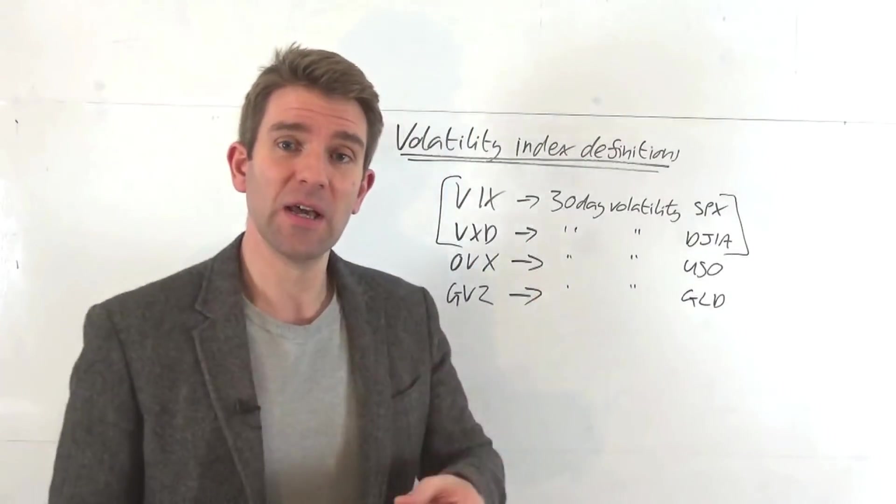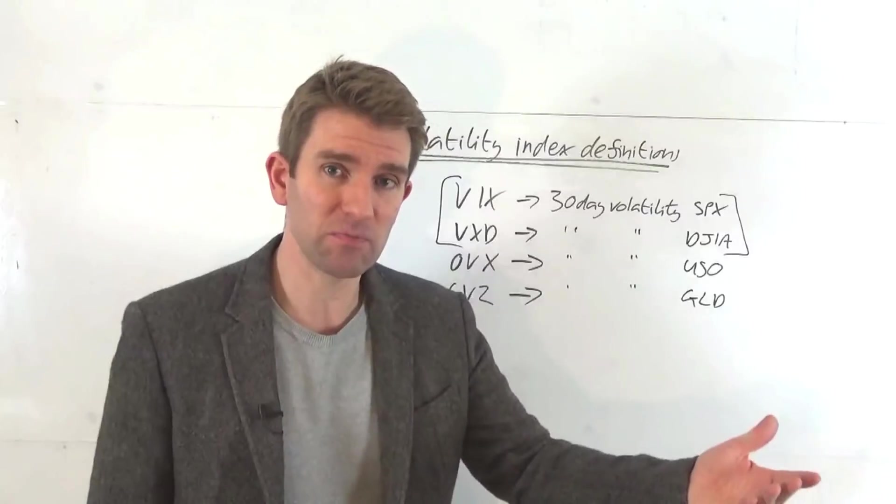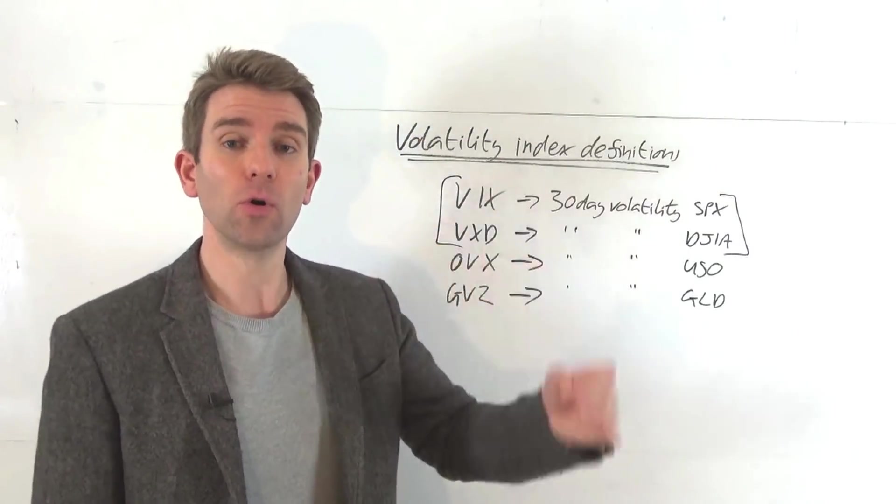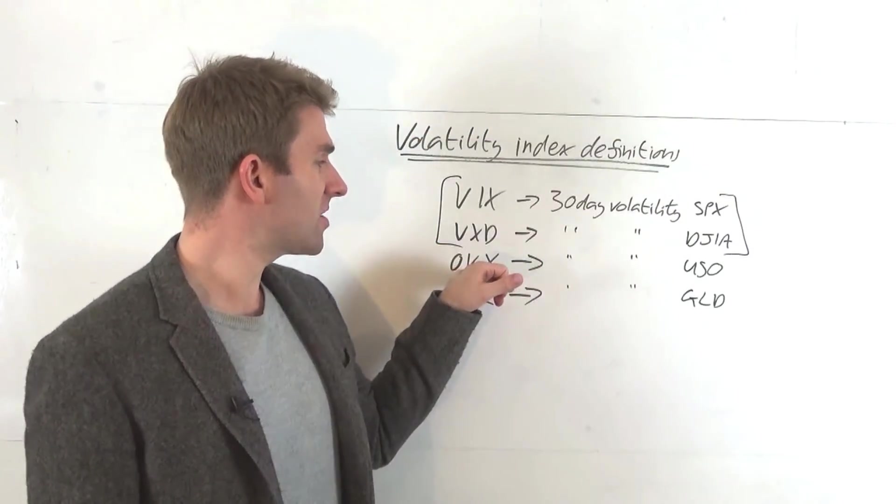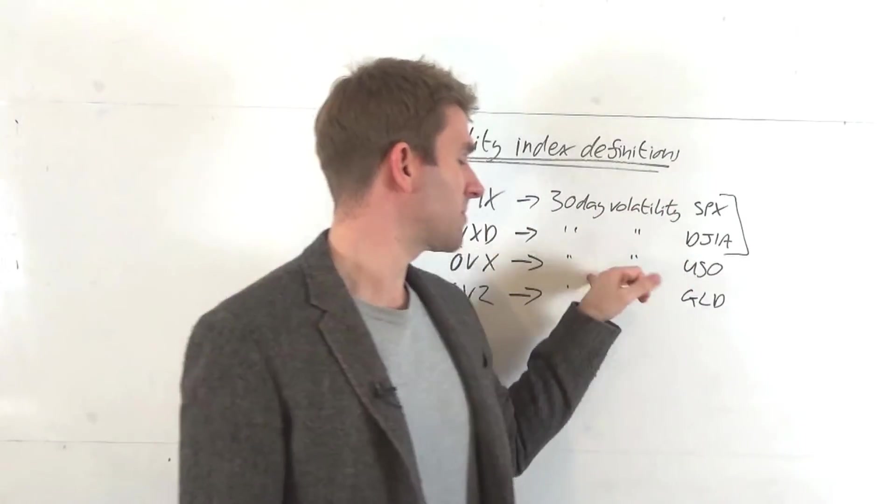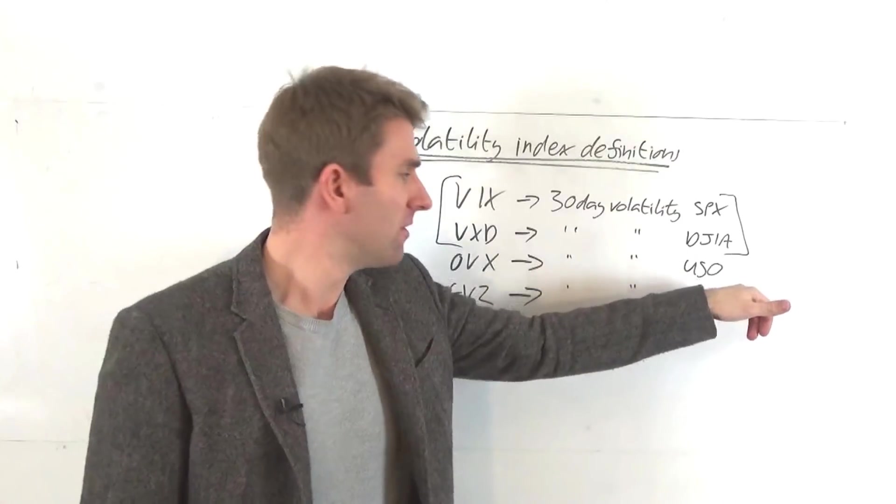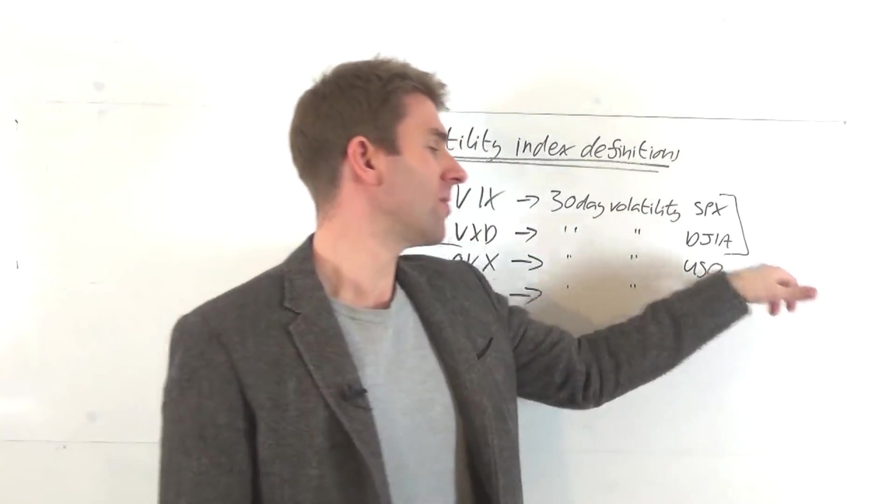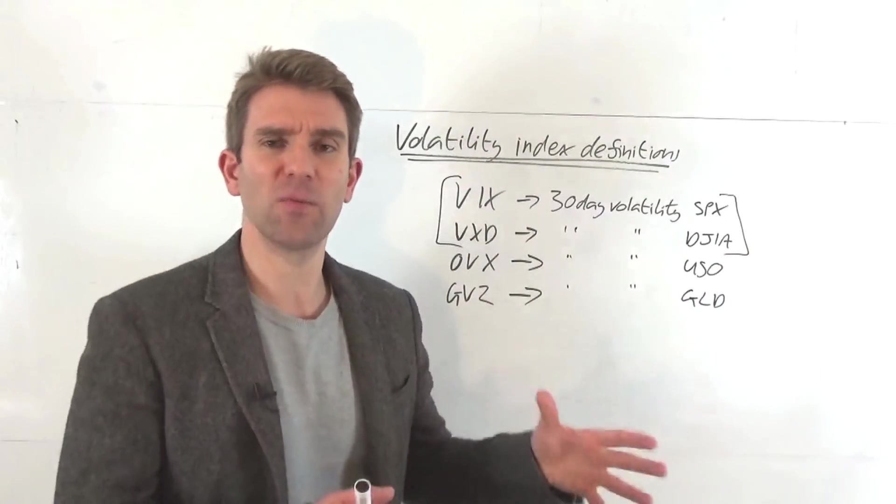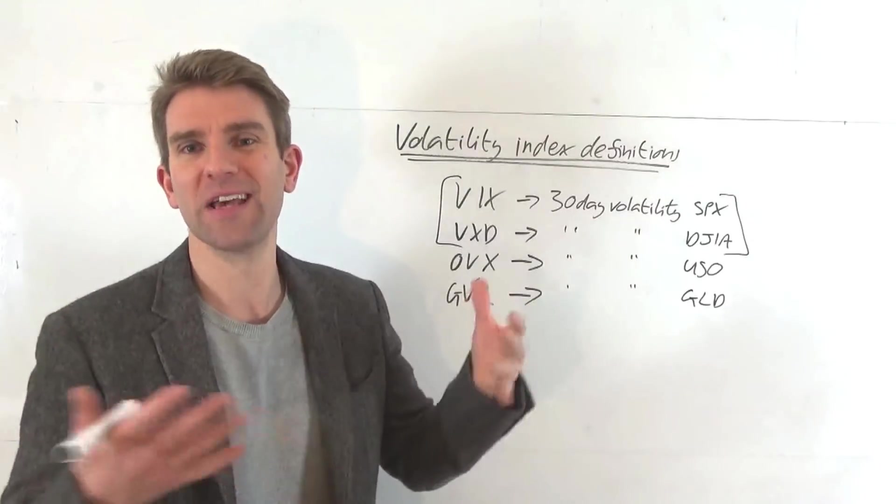The ones that might be interesting, specifically when we get some exciting moves on crude oil or gold, are these two. OVX, which is, again, the 30-day expected volatility of USO. USO is the ETF for crude oil. It tracks crude oil front months, a little bit of far month. It basically tracks the crude oil price. That's as good as it for now.